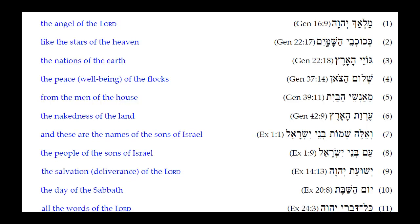Number three: Goyei HaArts. This is masculine plural construct from Goy — Goyim is the masculine plural absolute, and here the final Mem Sofit changes to a Seri Yod for the construct. Translation: 'the nations of the land' or 'of the earth.'